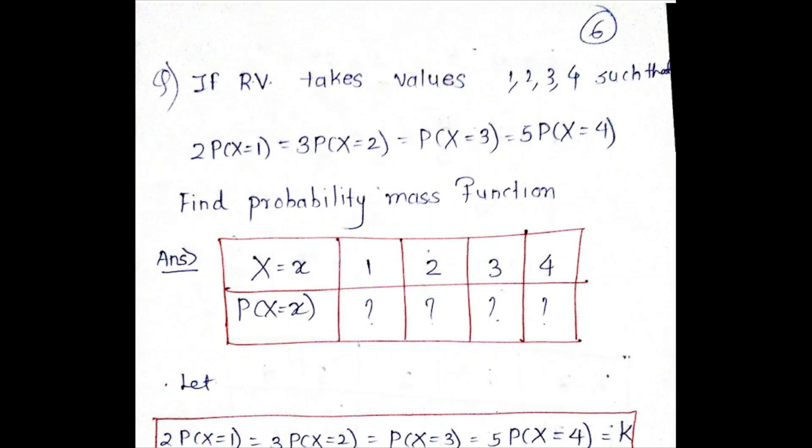What does the question say? RV stands for random variable. If a random variable takes values 1, 2, 3, 4, such that 2P(X=1) = 3P(X=2) = P(X=3) = 5P(X=4). Find the probability mass function. That means the values taken by X are 1, 2, 3, 4. You have to find out the corresponding probability value at each x.